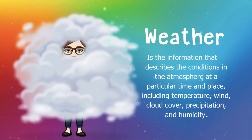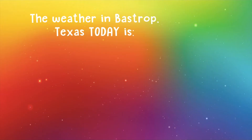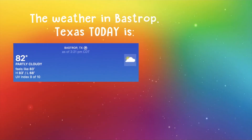Now let's talk about weather. Weather is the information that describes the conditions in the atmosphere at a particular time and place, including temperature, wind, cloud cover, precipitation, and humidity. The weather in Bastrop, Texas today — today is May the 11th, 2020. Do you remember what the weather was in May of 2020? Well, it's 82 degrees and it's partly cloudy.